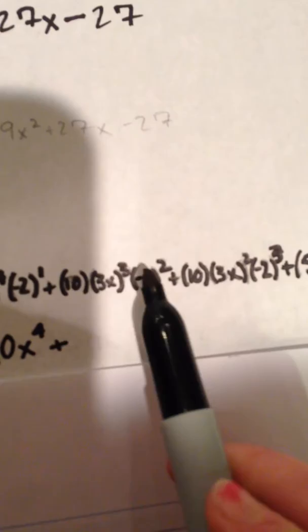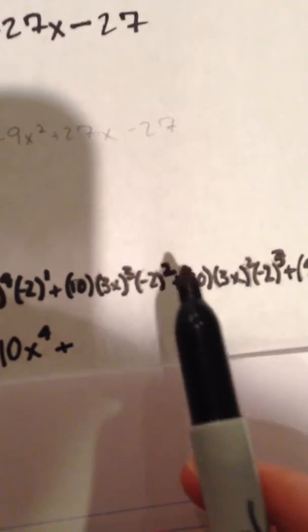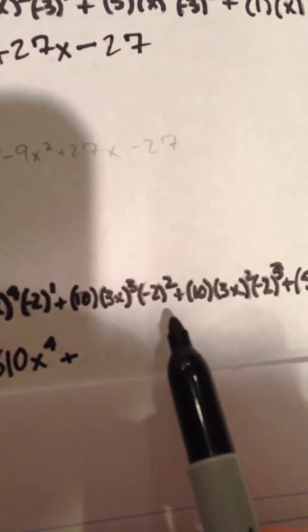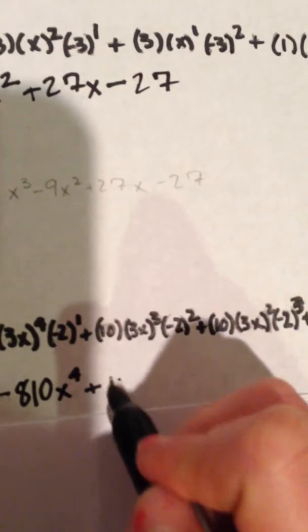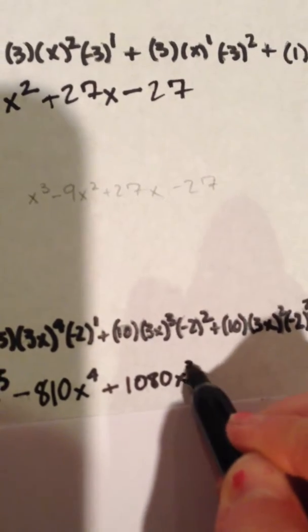Our next one is positive. It's 3x cubed times 10, which is 270 times four. So that makes it 1,080x cubed.